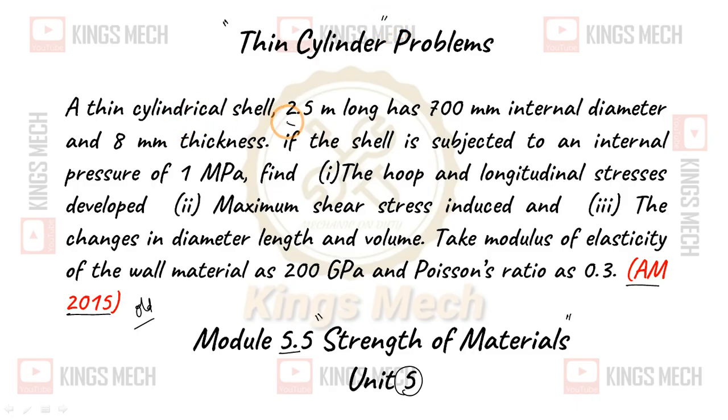A thin cylindrical shell, 2.5 meter long. L equals 2500 millimeters because we convert meter to millimeter. 700mm internal diameter, small d, and 8mm thickness, t.